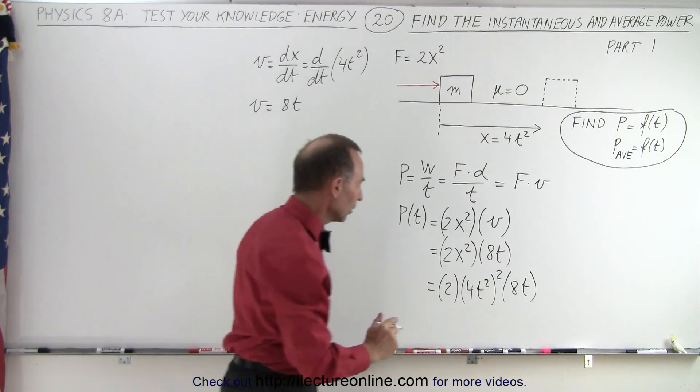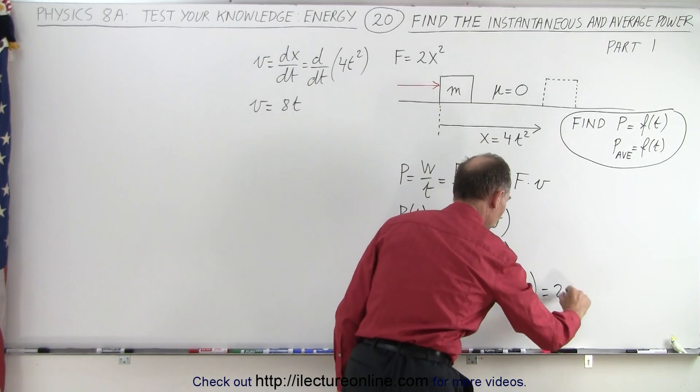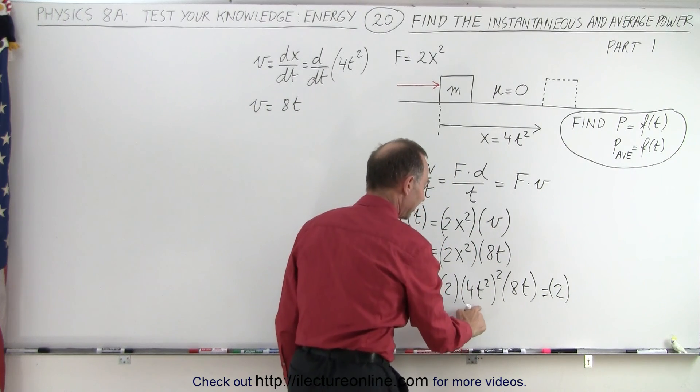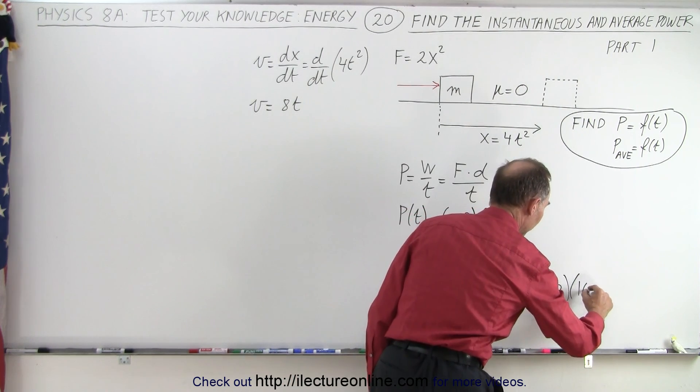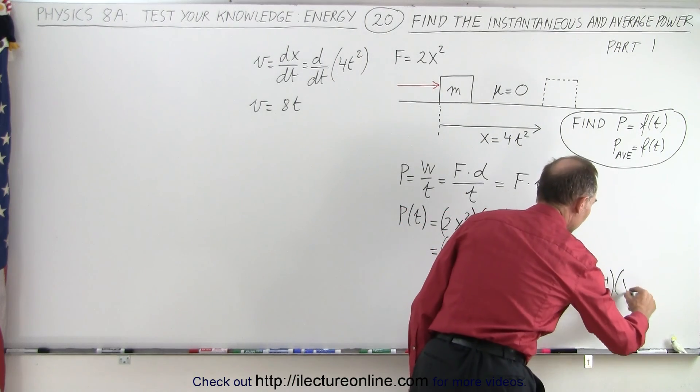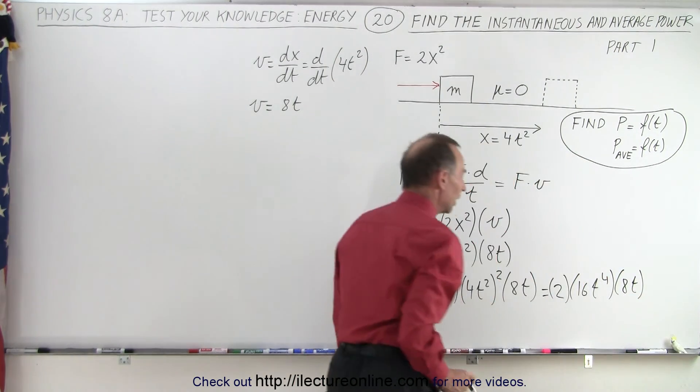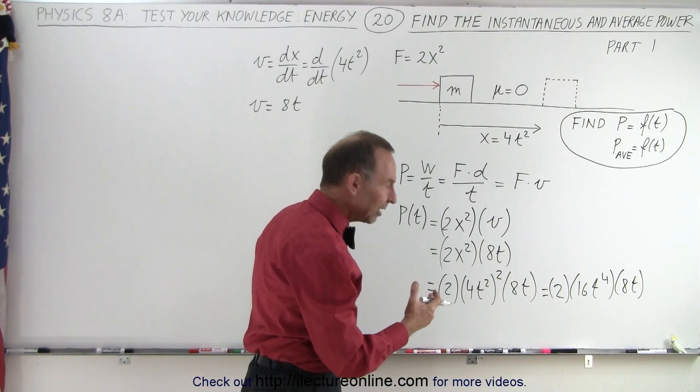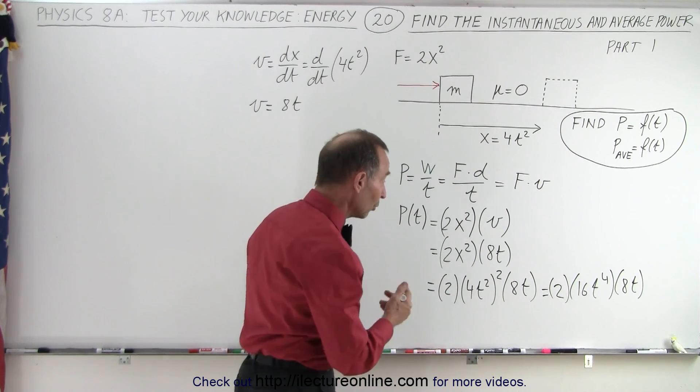And notice if I square that, I end up with the following. I end up with 2 times 16t to the fourth power, 16t to the fourth power times 8t. And notice that 2 times 8 is 16, and 16 times 16 is 256.